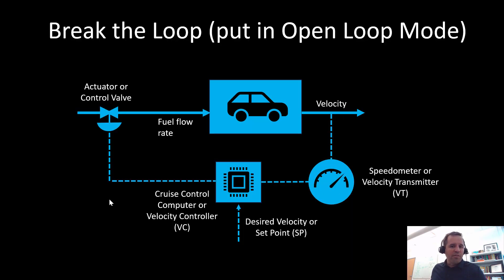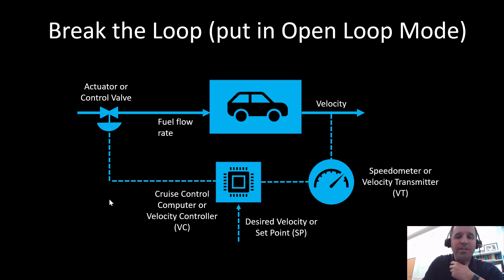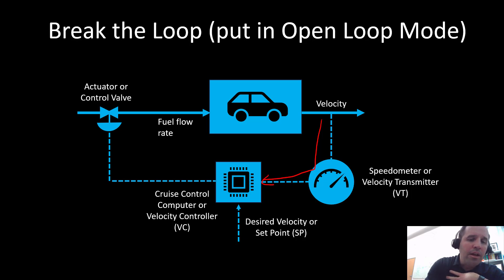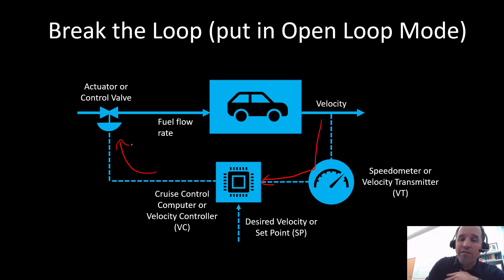As a refresher, we talked about how to put a car in closed loop, or basically turn on cruise control mode. When you turn on cruise control, your speedometer feeds your velocity into the cruise control computer, which calculates what the fuel flow rate should be and sets the position of the fuel flow valve actuator.